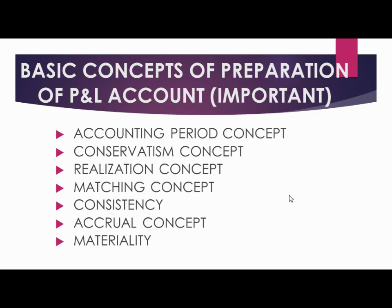There are certain basic concepts used for the profit and loss account as well, similar to the balance sheet. The first is the accounting period concept — everything is calculated for a specific accounting year. The second is the conservatism concept, which means transactions should reflect the lowest estimate of income. Cost or market value, whichever is lower, should be defined.